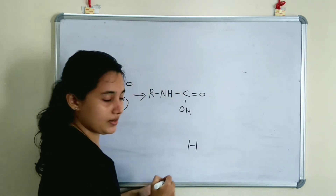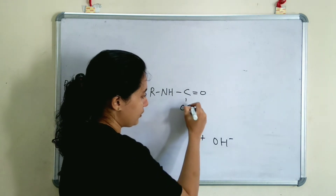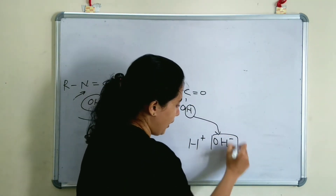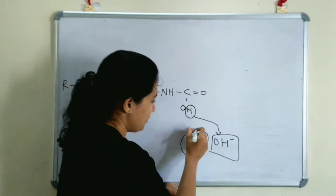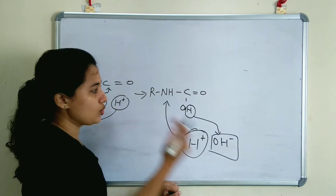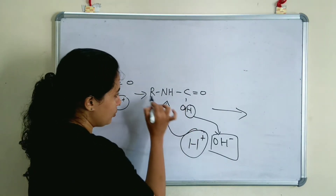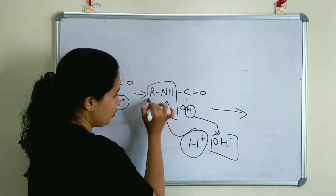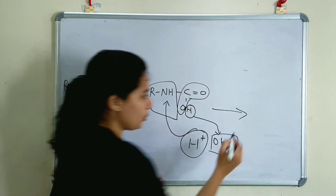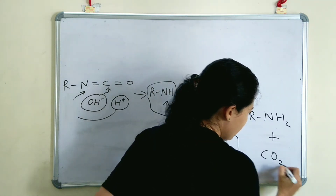Again adding water — H⁺ and OH⁻. The hydrogen of OH combines with OH⁻ to form water, and H⁺ is added to R-NH, giving R-NH2 and CO2. So the final product is the primary amine plus carbon dioxide.